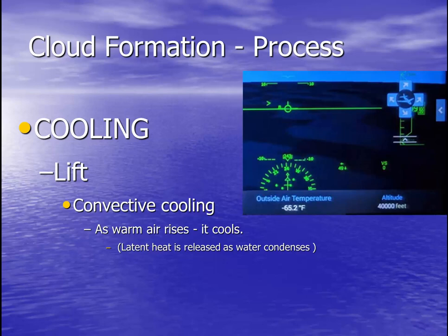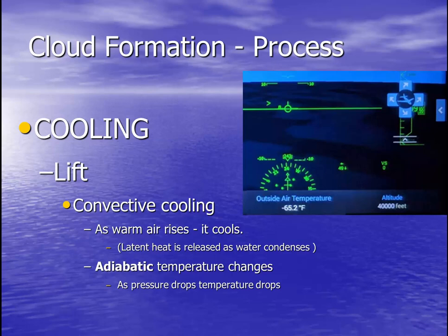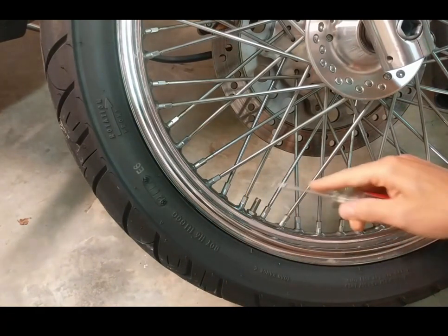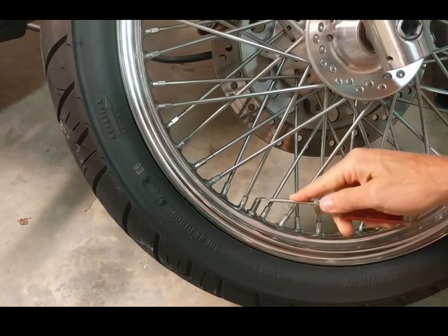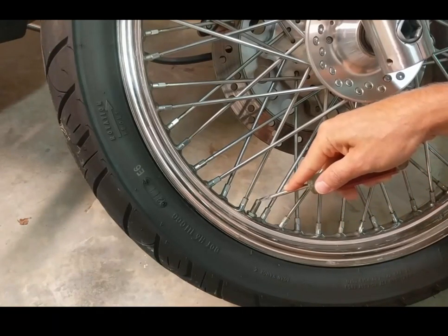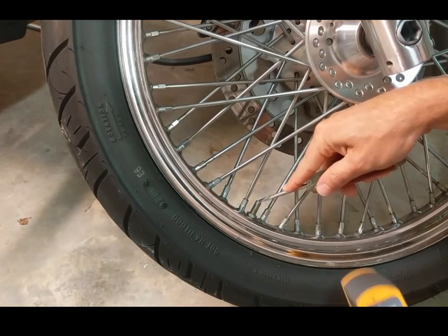Keep in mind, though, the higher up you go, the colder it gets. This can be seen in this picture I took recently on an airplane flight — the plane was flying at 40,000 feet and the outside air temperature was 65 degrees below zero. Along with convective cooling, adiabatic temperature changes come into play. Adiabatic temperature changes happen as air pressure drops, so does the temperature. You can easily experience an adiabatic temperature change by letting air out of your tires. Notice the temperature of the valve on my motorcycle tire starts at 74 degrees. After just a few seconds of letting air out of the tire, the temperature will have dropped significantly.